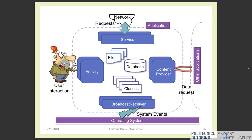Broadcast receivers don't have any user interfaces but they can generate notifications in the status bar. This figure summarizes the structure of an Android application: activities support user interaction, services perform background operations, content providers share data with other applications, and broadcast receivers react to system and user events.